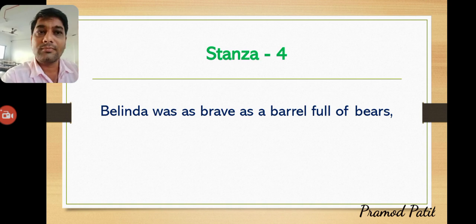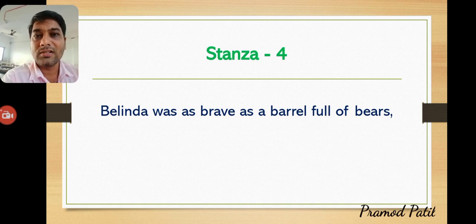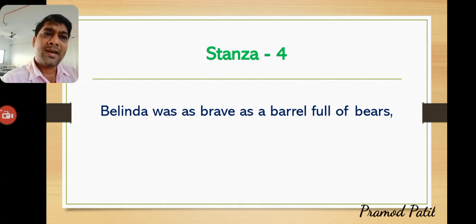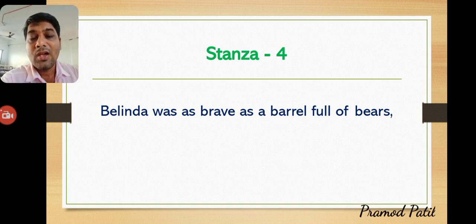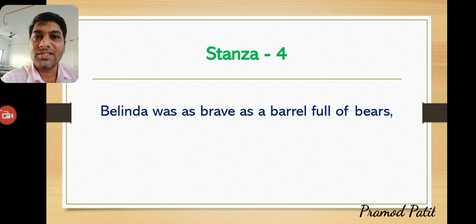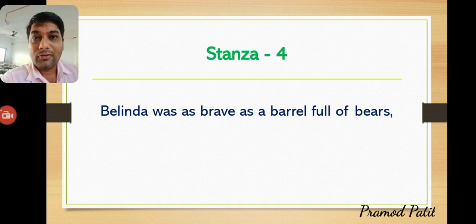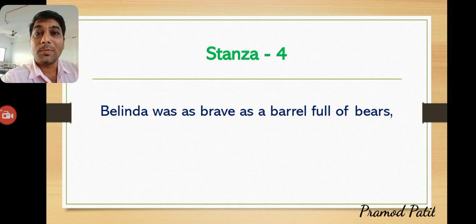The fourth stanza tells us Belinda was as brave as a barrel full of beers — the simile comparing her energy to alcohol, meaning she feels she is the greatest and unbeatable, like someone who is drunk on confidence. Ink and Blink both chase lions down the stairs, and Mustard is as brave as a tiger in a race.